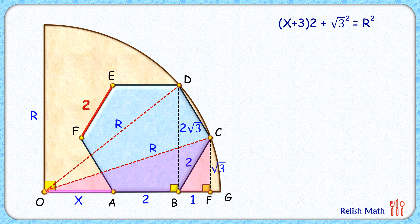The second right angle triangle we are considering is triangle OBD. Now in this triangle, again applying Pythagorean theorem, we will get (x+2)² + (2√3)² = R².